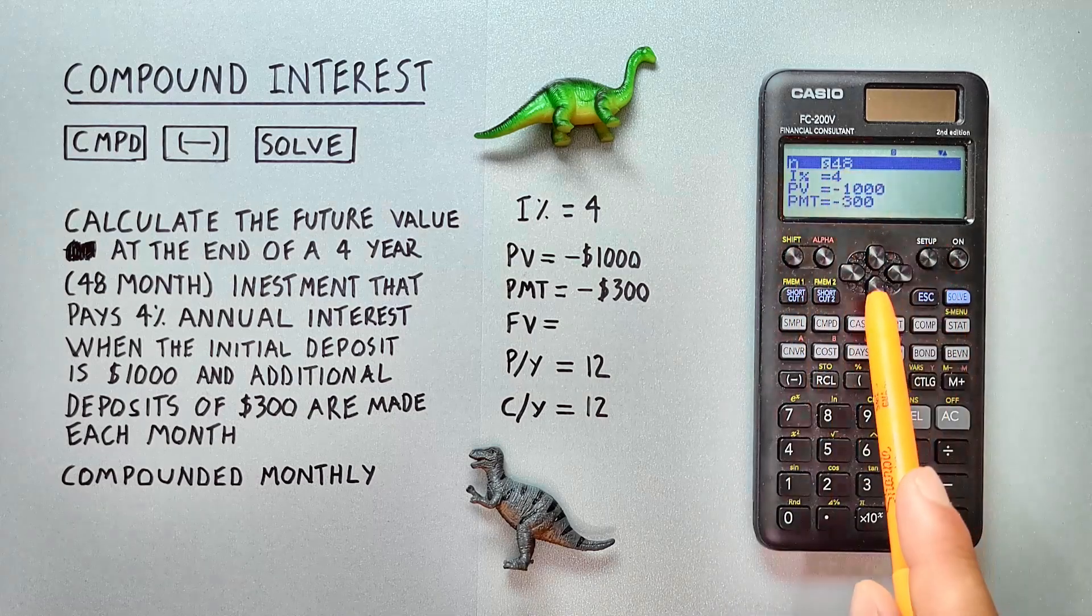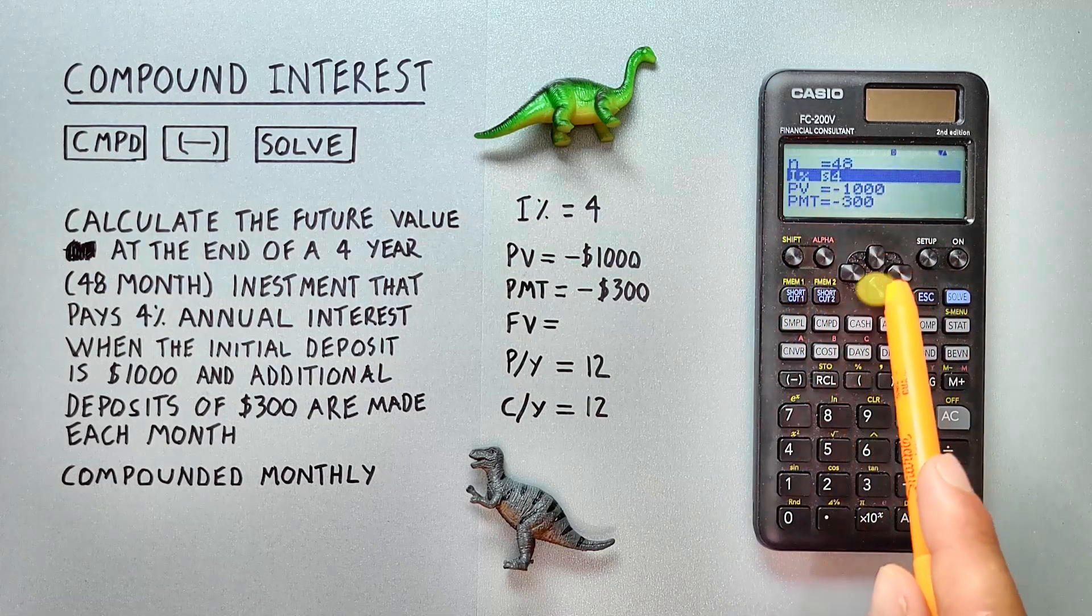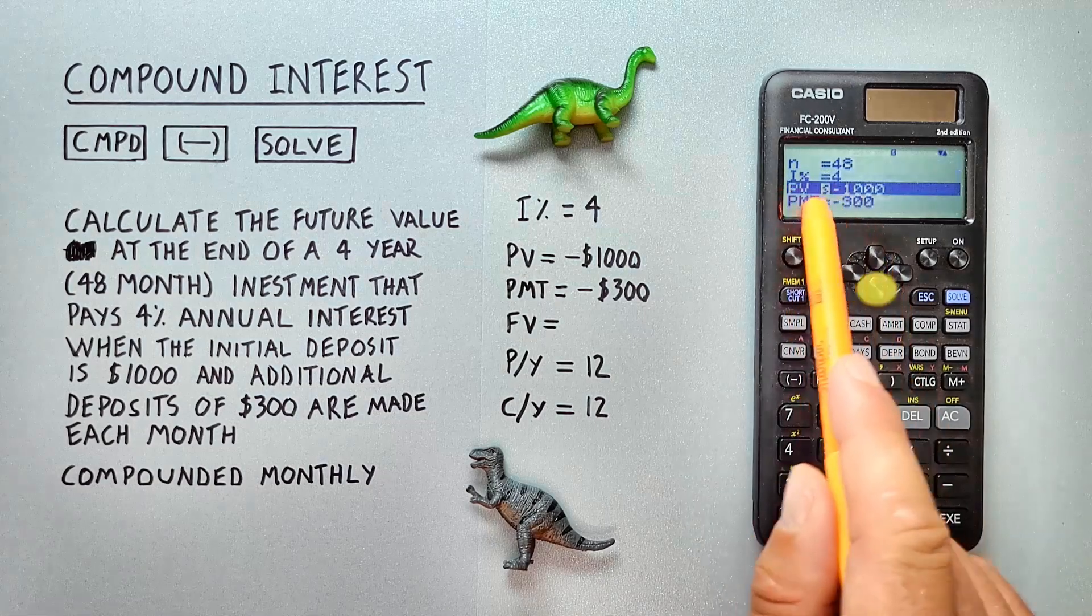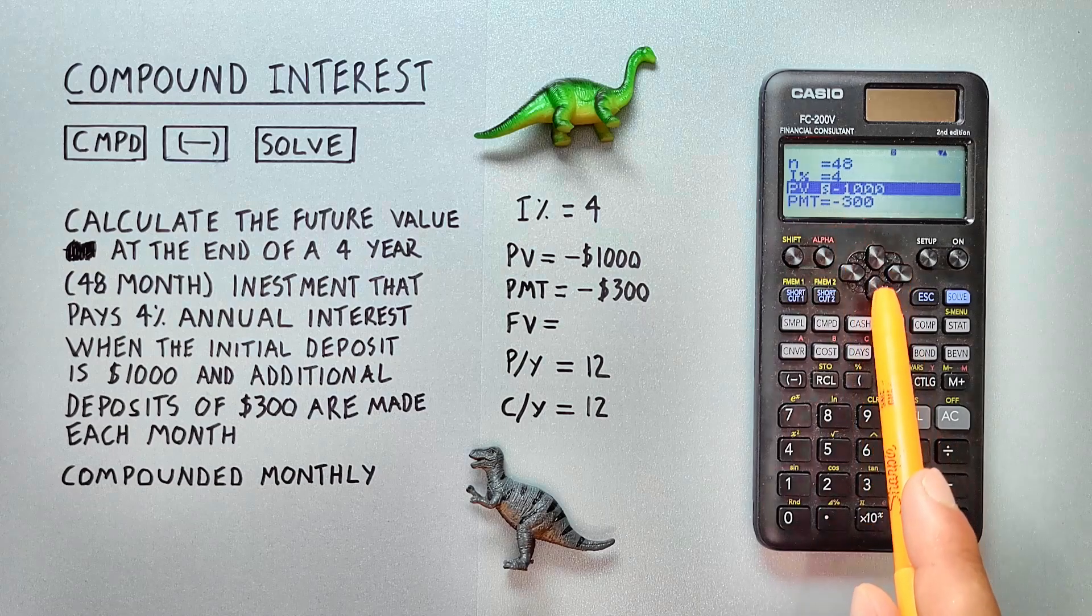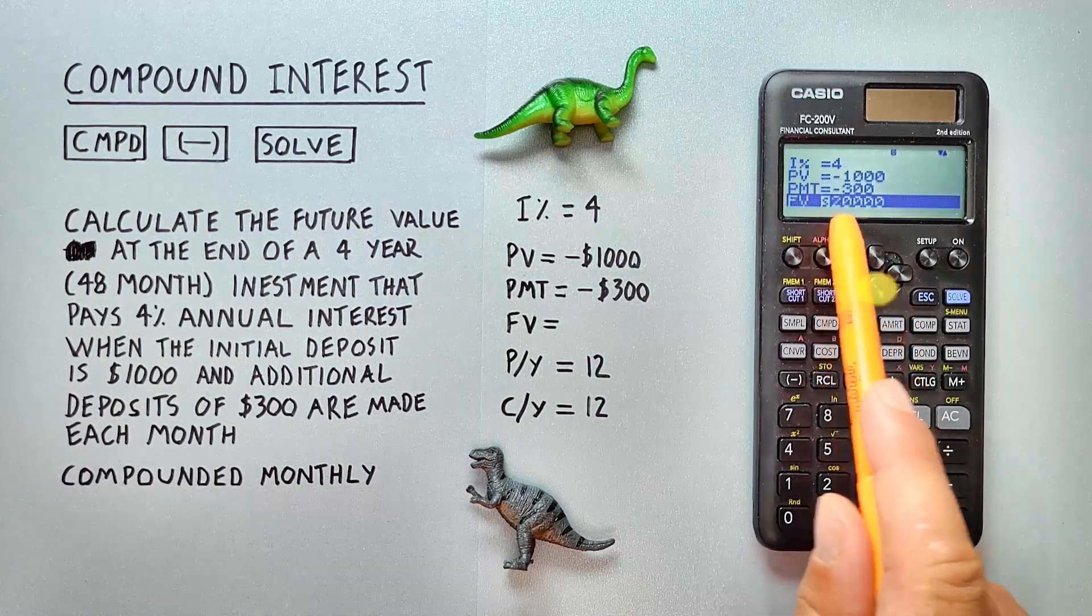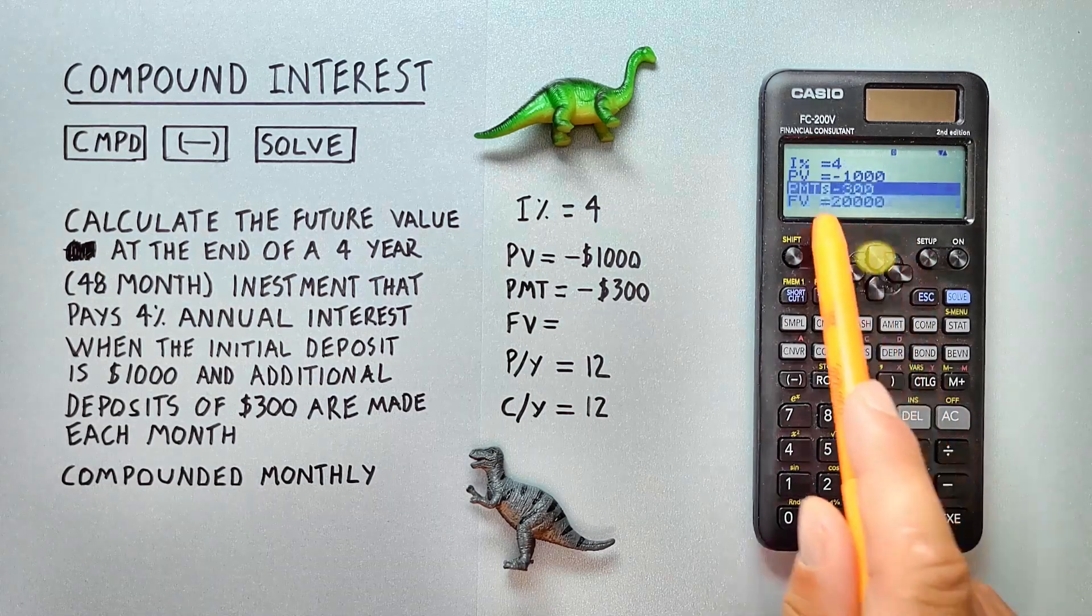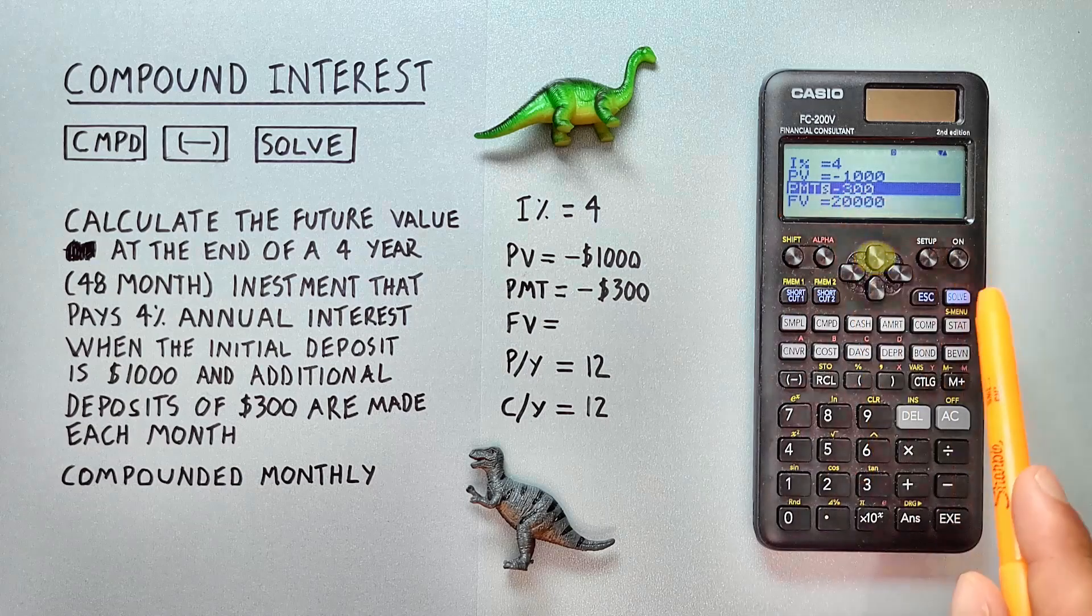And if everything else stays the same, so our number of payments, our interest rate, and our present value all stay the same, what kind of payments do we have to put in to get our $20,000 at the end? We can just highlight the payment and press solve.